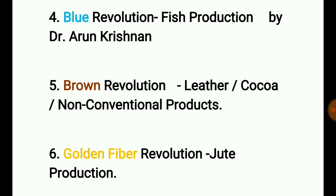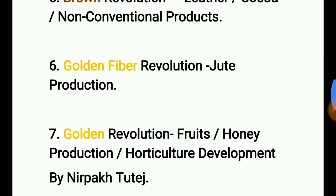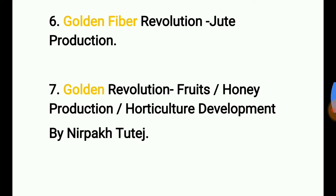The fifth is the Brown Revolution, for leather, cocoa, and non-conventional products. Your task is to find who coined this term. The sixth is the Golden Fiber Revolution, for jute production. The seventh is the Golden Revolution — note the difference from Golden Fiber — the Golden Revolution is for food, honey production, and horticulture development.